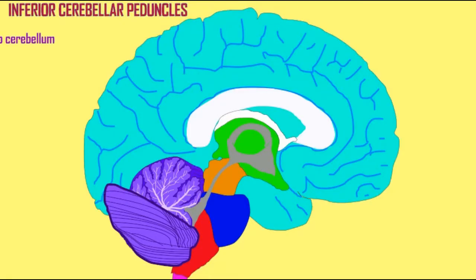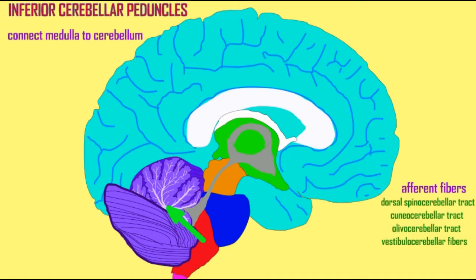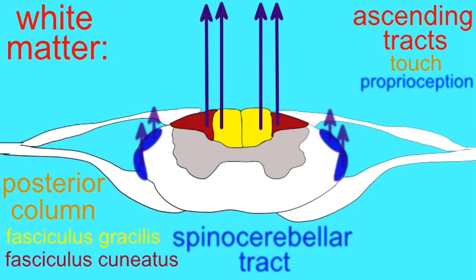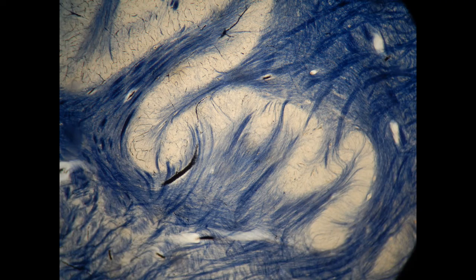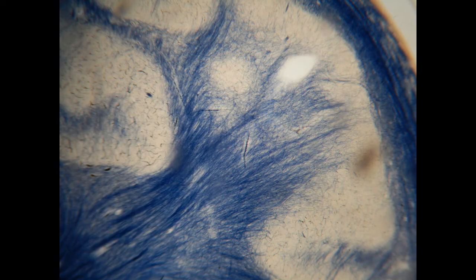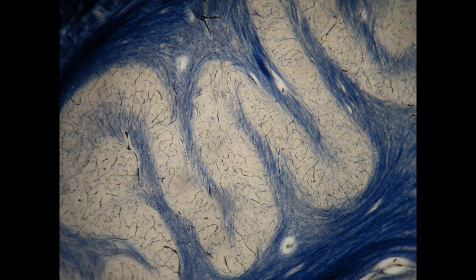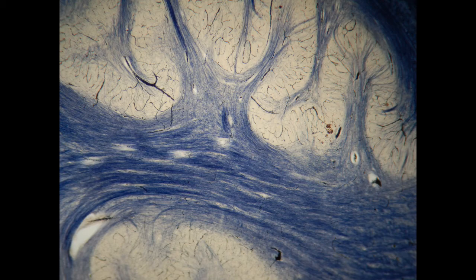The inferior cerebellar peduncles connect the medulla to the cerebellum. These fibers are primarily afferent — incoming fibers — such as the dorsal spinocerebellar tract, bringing in information from proprioceptors, and then others coming from nuclei of the medulla, such as the olivocerebellar tract coming from the olive nucleus. In these images, the olive nucleus of the medulla is the source of afferent fibers, which then enter the cerebellum through the inferior cerebellar peduncles.